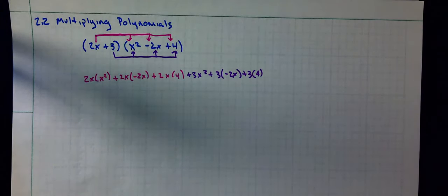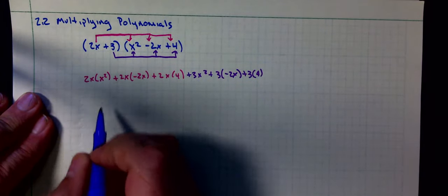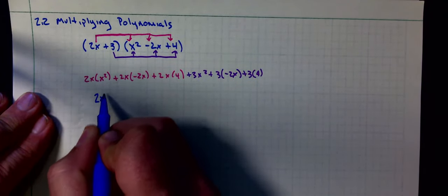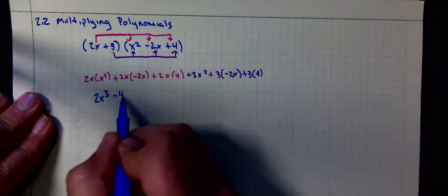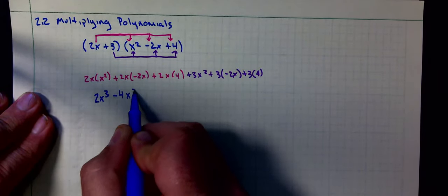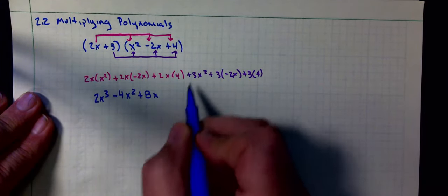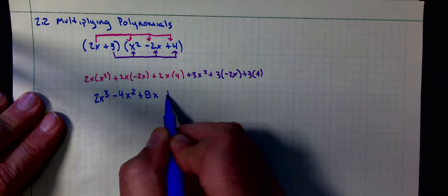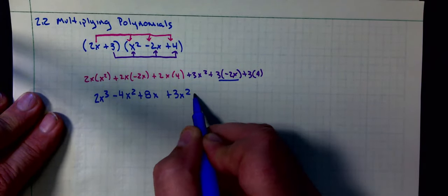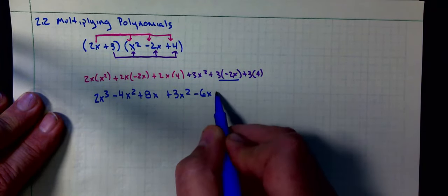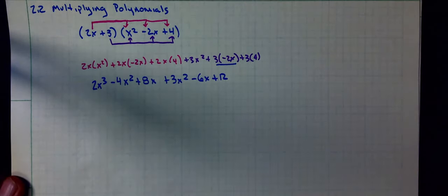I'm going to do the multiplications and then combine like terms. 2x times x squared is 2x cubed, minus 4x squared, x times x is x squared, plus 8x, 3x squared, minus 6x, plus 12.